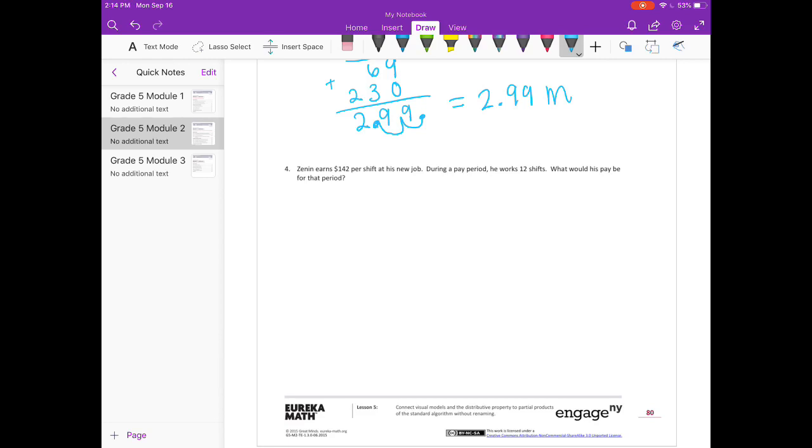Zenon earns $142 per shift at his new job. During a pay period, he works 12 shifts. What would his pay be for that period?